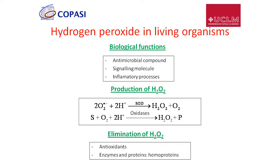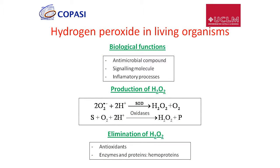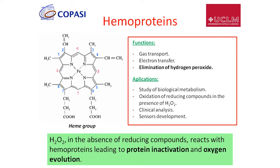In this work we are focused on hydrogen peroxide in living organisms. This molecule is very important because it plays different biological functions — it's an antimicrobial compound, a signaling molecule, and it acts in different processes like inflammatory processes. The production of hydrogen peroxide is done by some enzymes: superoxide dismutase and oxidases. A low concentration of hydrogen peroxide is necessary for living organisms, but an accumulation is very dangerous. That is why there are compounds that eliminate hydrogen peroxide, such as antioxidants, enzymes, and proteins like hemoproteins.